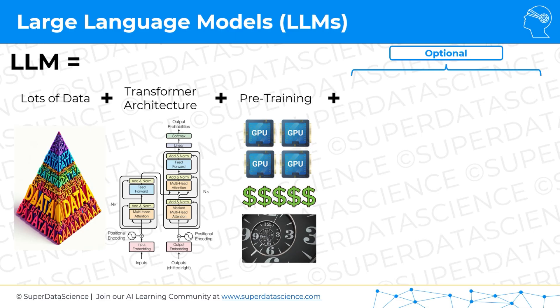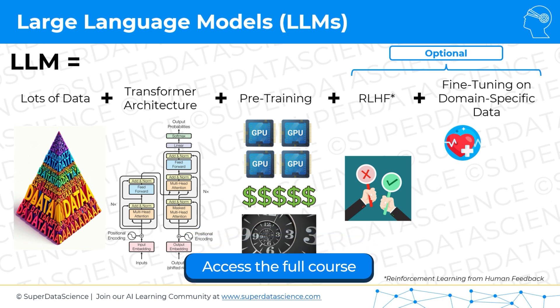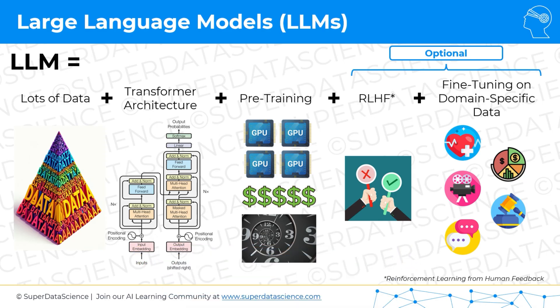Then there are some optional components. For example, reinforcement learning from human feedback, or RLHF for short, which we'll also talk about. And there is fine-tuning on domain-specific data — whether it's healthcare data, finance data, movie data, legal data, or data relating to chats that you want your organization to have with customers or employees and so on. You can fine-tune on many different things and we'll talk about that as well.